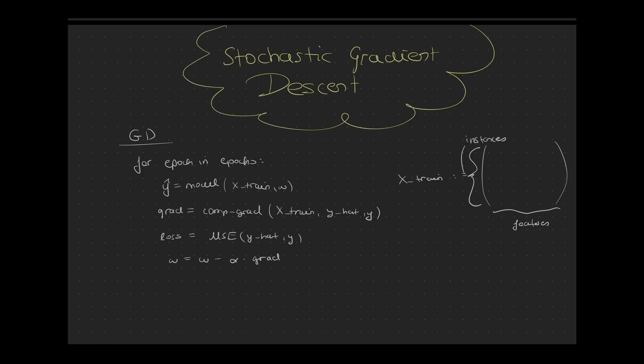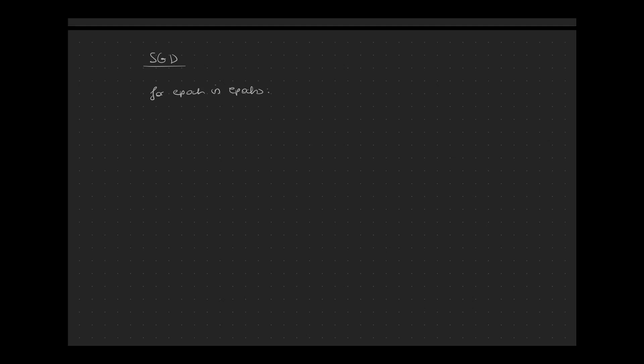What does iteration mean specifically? In order to understand this I will show you what Stochastic Gradient Descent does. So we have again our loop over the number of epochs. And inside of that loop the first thing we will do is to shuffle the training set — just randomly shuffling it such that the instances are out of order.